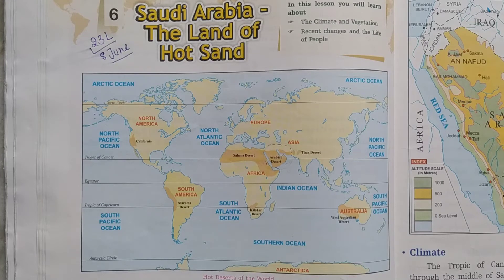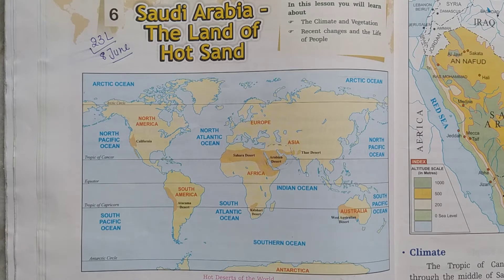Dear students of class 5th, this is our 23rd video lecture of class 5th SSD. Today in this video lecture, we will discuss the 6th chapter of SSD and the name of the chapter is Saudi Arabia, the land of hot sand. So let's start reading this chapter.